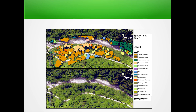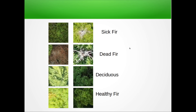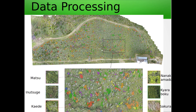We have already seen an example where we used image classification to classify different patches — different images of trees — into the sick, dead, unhealthy, and non-deciduous tree categories. The mosaic tree census was semantic segmentation; classifying those image patches is image classification. Sometimes you can pretty much decide which approach you want to use.